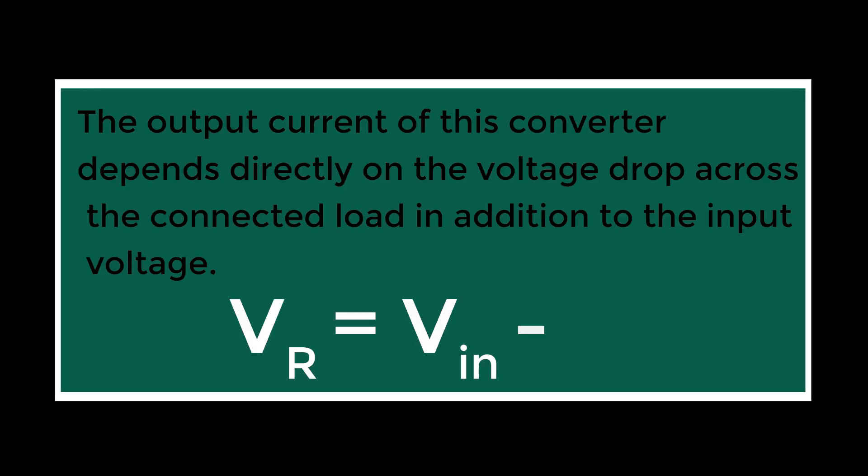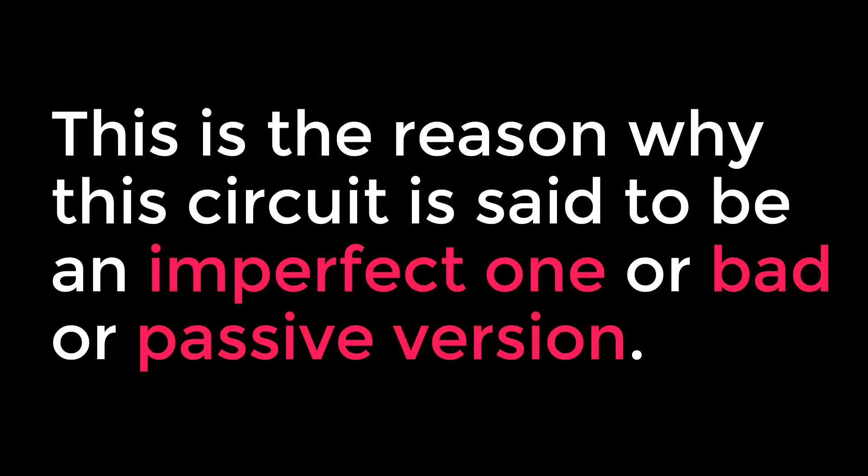But practically, the output current of this converter depends directly on the voltage drop across the connected load, in addition to the input voltage. V_R equals V_in minus V_L. This is the reason why this circuit is said to be an imperfect one, or bad, or passive version.